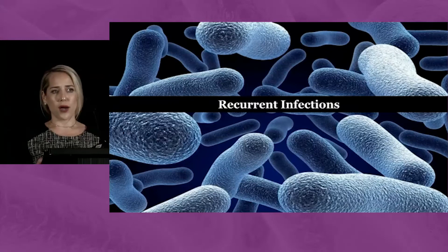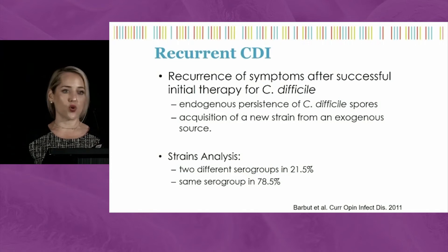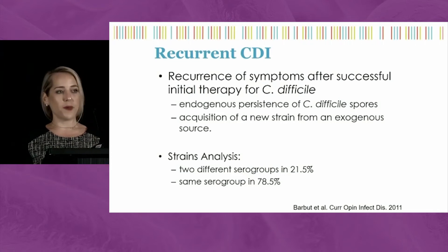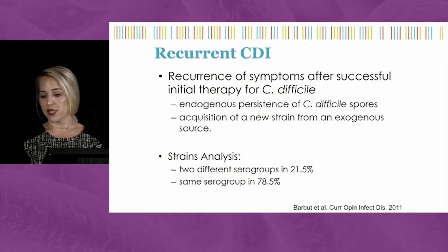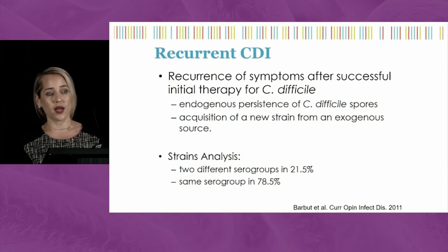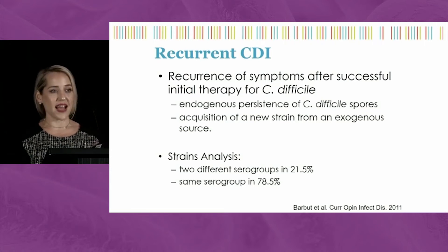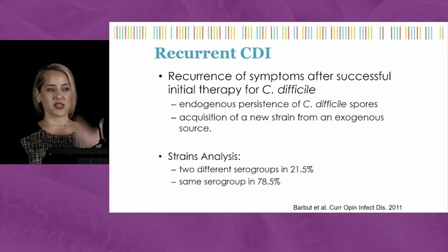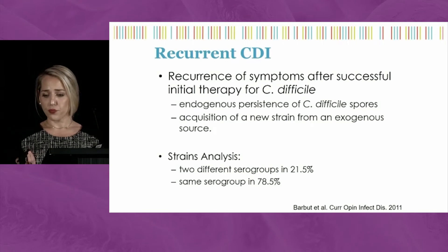Recurrent C. diff is really the recurrence of symptoms after a successful initial course of therapy—meaning you gave the patient treatment, their diarrhea improved, they felt better, and then days to weeks later their symptoms come back without any other inciting antibiotic courses. This can be from the endogenous strain that caused the initial infection or acquisition of a new strain. We don't routinely do strain-level analysis because it doesn't change management, though when studied, the vast majority of patients were reinfected with the same strain.